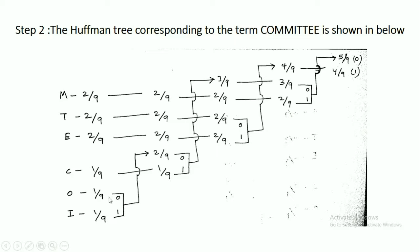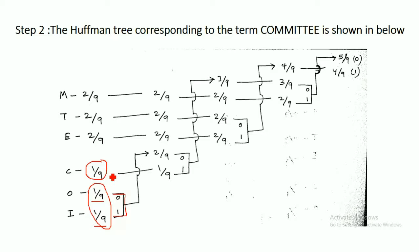Now we consider the two lowest probabilities, which are for O and I, each 1/9. We assign 0 to the upper probability and 1 to the lower probability. Adding these two probabilities gives 2/9. Since 2/9 is greater than the probability of symbol C (1/9), this 2/9 is placed above C — that is, between E and C in the arrangement.